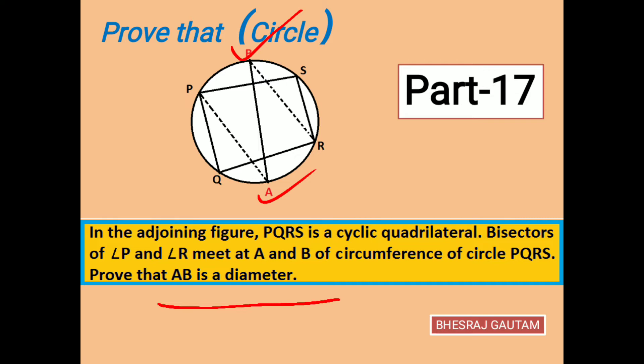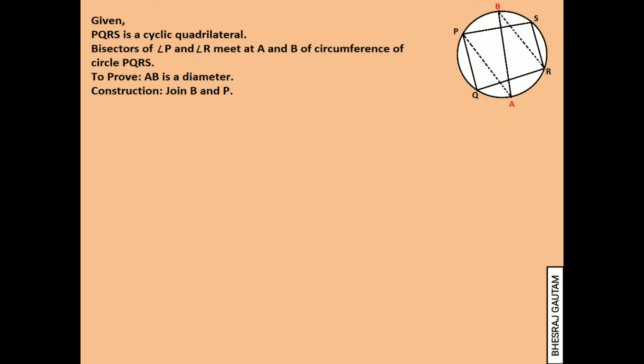With this let's begin the solution. As usual we always begin the proof with a diagram, all provided information, and the condition to prove. As construction eases us in proving this question, let's join B and P. We set up all the steps in the statement reason table.